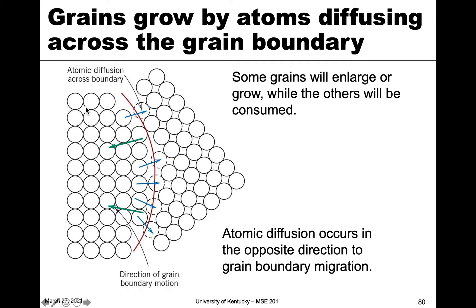So how does this happen? Let's look at an atomic view. Here on the left we have a grain, here on the right we have another grain, and in between we have a boundary. This is a grain boundary — you can see it's kind of loose and things aren't in the proper positions. Depending on which direction the flow is, you can get atoms going from one grain to the next.